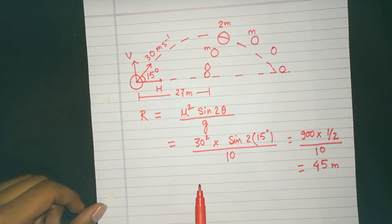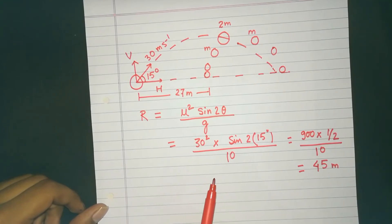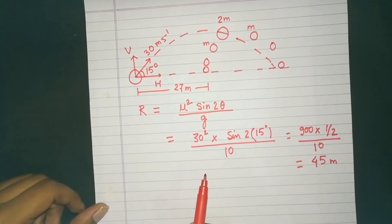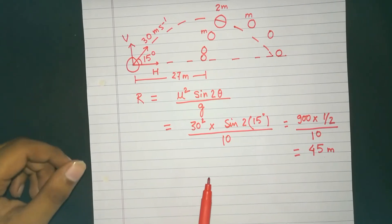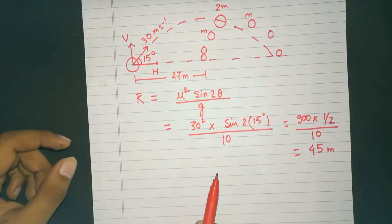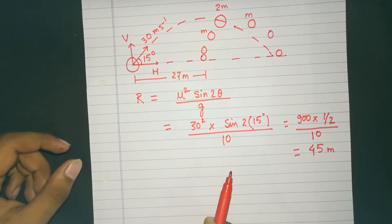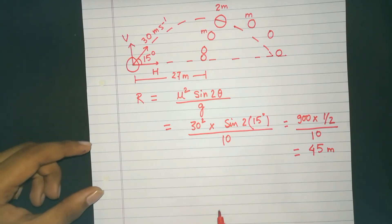Now, since the cracker is exploding somewhere in the air, the center of mass of the cracker would travel the same trajectory as the cracker. But these two particles, these two identical masses that exploded out of that cracker, would travel some different paths.